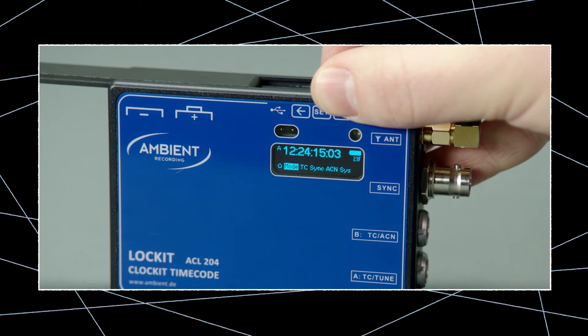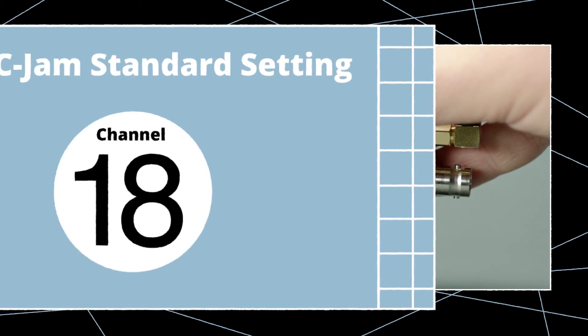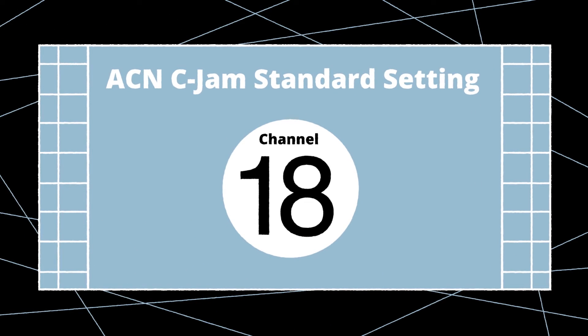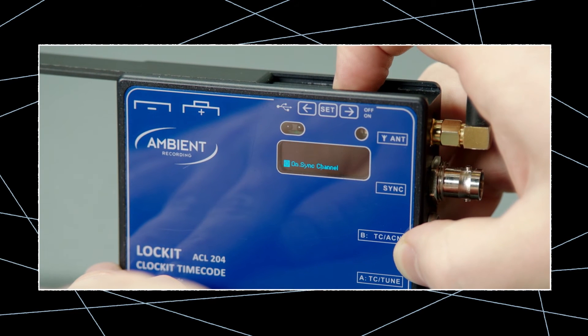Since the ARRI ALEXA internally syncs to the external timecode when working in regen mode, we can switch off the sync generator on the locket to save battery. Since we're using the C-Jam mode, the ACN is already enabled and working per factory default on channel 18. If for some reason you want to work on a different channel, or use some of the features in the extended menu, jump into the ACN menu and set up the ACN network as required.